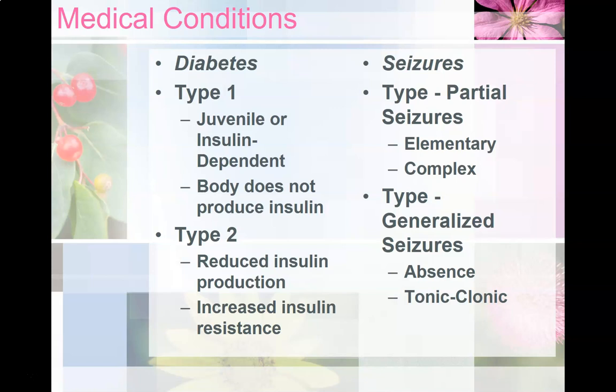Type 1, or juvenile diabetes, refers to the body's inability to produce insulin. Type 2 is the most common, with 90-95% of all cases of diabetes being type 2. In general, individuals with type 2 diabetes are overweight. It has been estimated that 80% of individuals with diabetes are overweight.